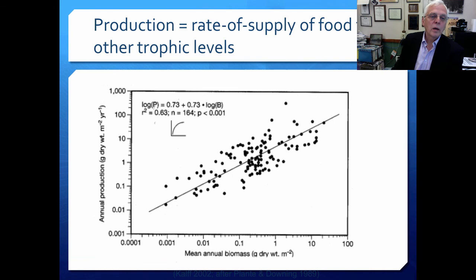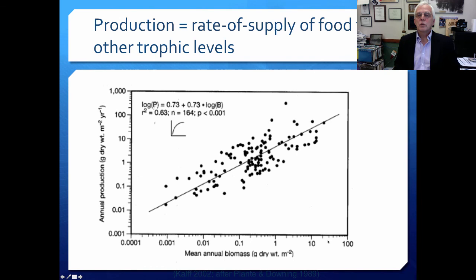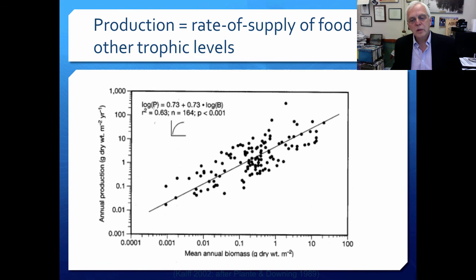Production is the rate of supply of food for other trophic levels. This is from some work I did in the past, also from the Calf Limnology book. The y-axis shows annual production in grams of dry weight per square meter per year, and the x-axis shows mean annual standing biomass. The more biomass we have, the greater the production. But at very high standing biomass, there's some kind of interference and the production rate per unit biomass tends to be lower. Oligotrophic systems with lower biomass tend to have higher rates or yields of zooplankton biomass than do the eutrophic systems.